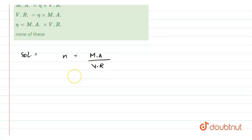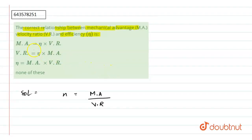ratio. So from the options, we can see that mechanical advantage is equal to efficiency into V.R. So from this